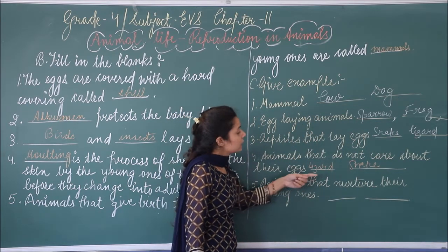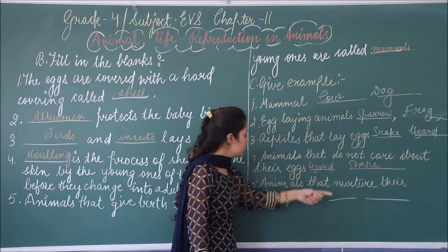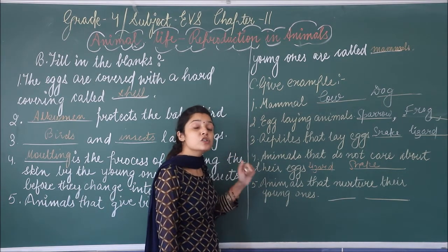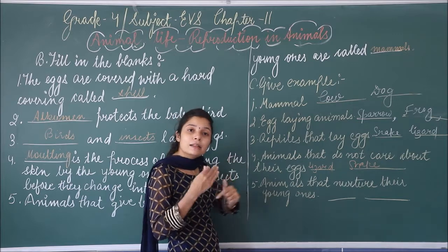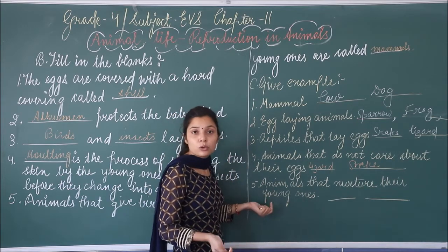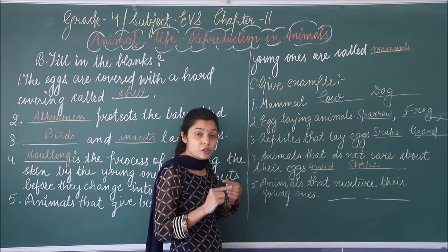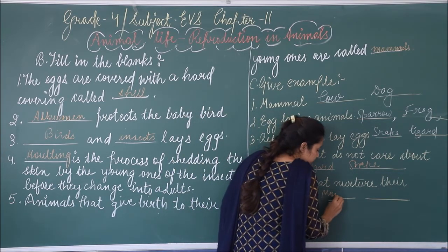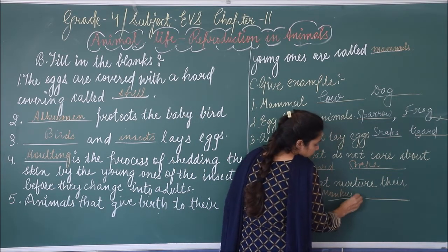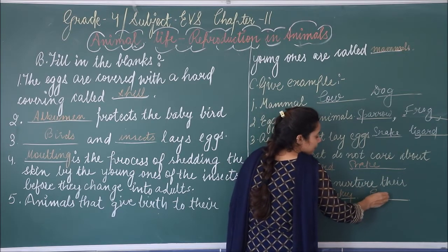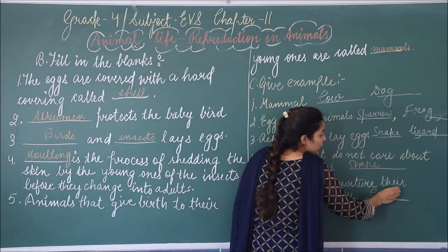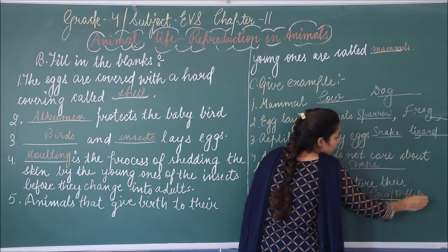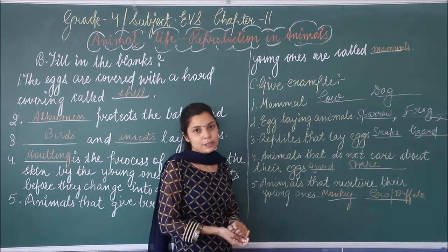Last: animals that nurture their young ones — unh animals ke naam likhne hain jo apne young ones ko nurture karti hain, dhyan rakhti hain, unko palti hain. Mammals woh hain jo apne young ones ko nurture karti hain. Toh hum likh sakte hain monkey aur cow. Yahan pe aapne 2-2 examples dene the.